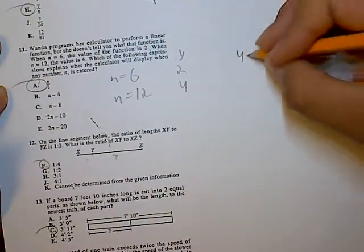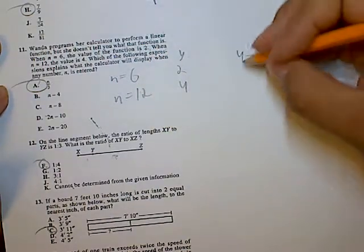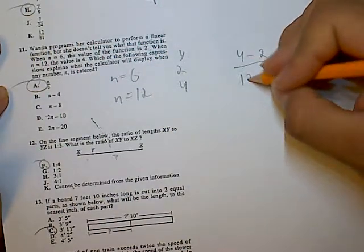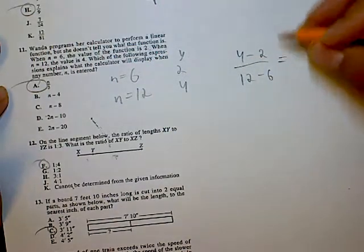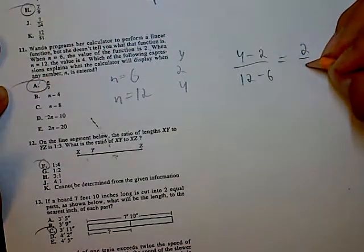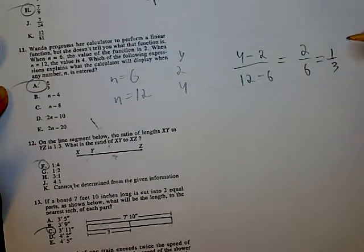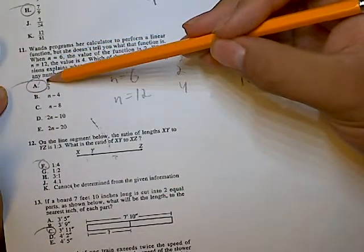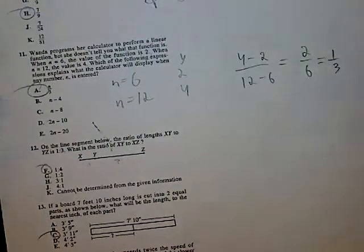We do y2 minus y1 over n2 minus n1, which gives us 2 over 6, or 1 over 3. So this would be our slope. Since A is the only one that has a slope, it would be the right answer.